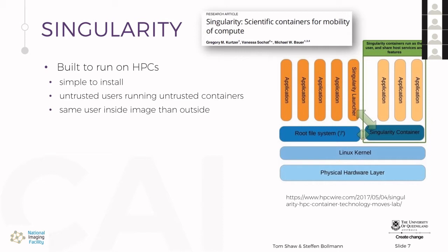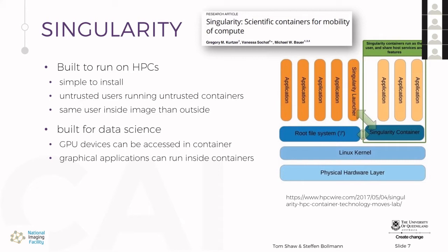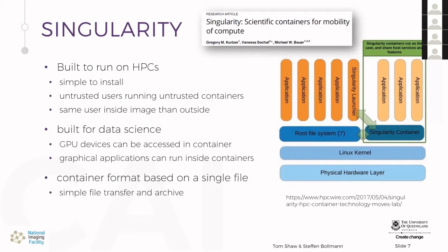Singularity allows untrusted users to run untrusted containers — meaning you are the same user inside the image as outside. This means Linux admins at an HPC don't face a security problem, which is why they'll usually allow you to run Singularity containers. All big HPCs in Australia currently have Singularity installed. Singularity is also built for data science — it allows easy GPU mapping for machine learning, and graphical applications run out of the box without any additional configuration.